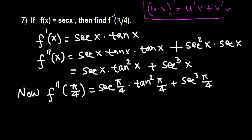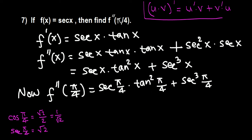What is the value of secant(π/4)? Secant is the reciprocal of cosine, and cosine(π/4) is root 2 over 2, which is the same as 1 over root 2. So the reciprocal of 1 over root 2 gives secant(π/4) equals root 2. And tangent(π/4) equals 1.